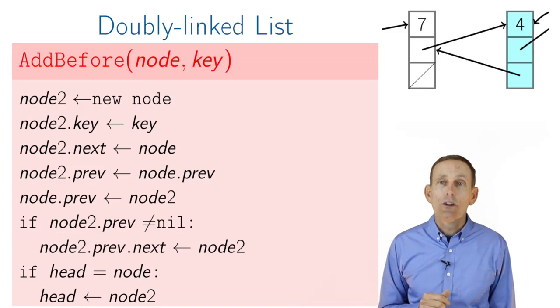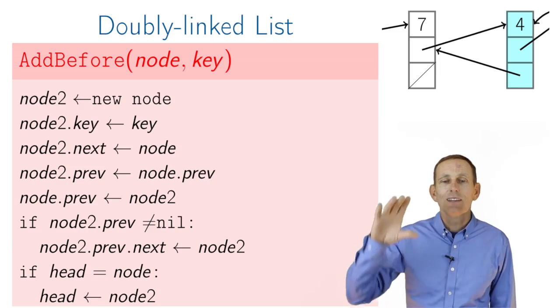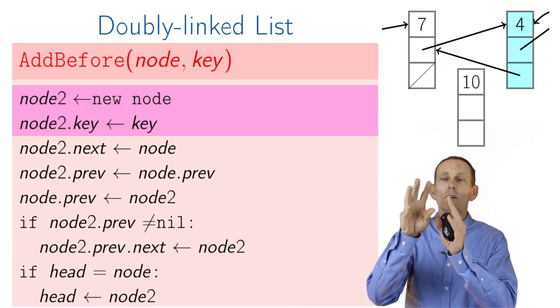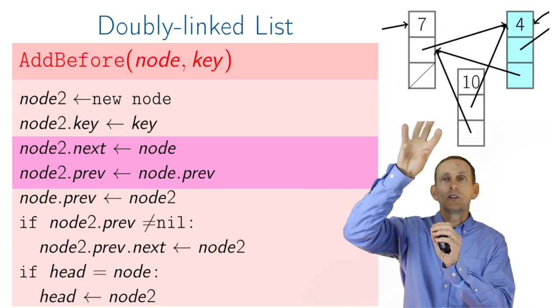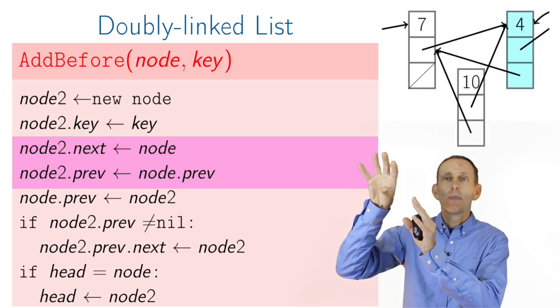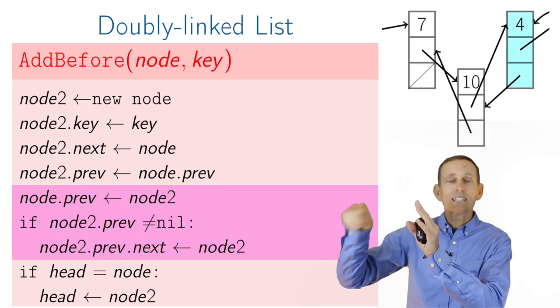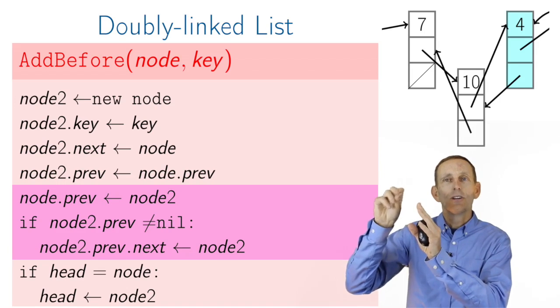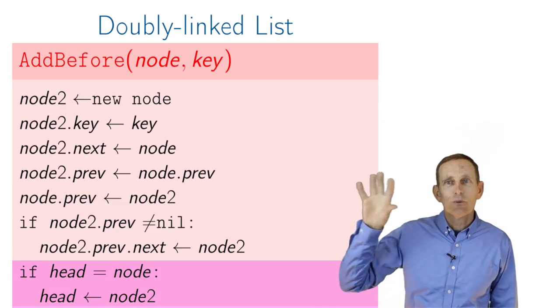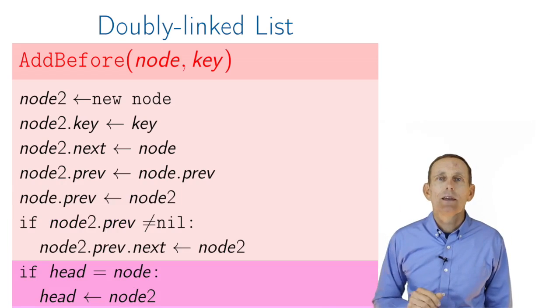But adding before also now works, in the sense that we can allocate our node, our new node, and its prev pointer will be the prev pointer of the existing node we're adding before. So we splice it in that way, and then we'll update the next pointer of that previous node to point to our new node. And finally, just in case we were adding before the head, we need to update the head.